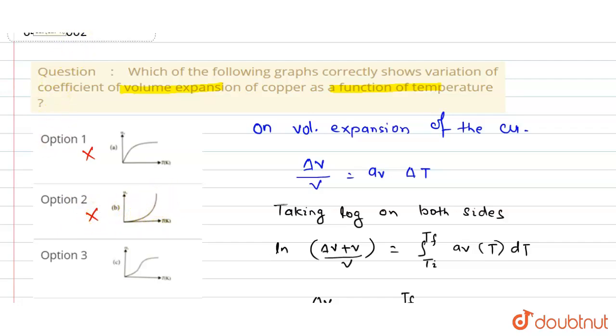Now we check the third option. This graph is linear and then non-linear, and after a particular temperature this becomes constant. So option third is the right answer.